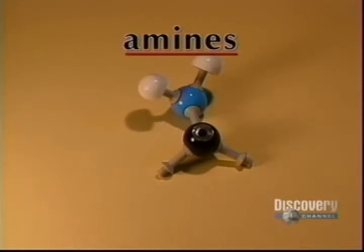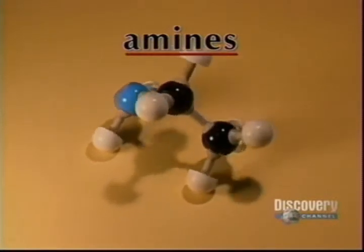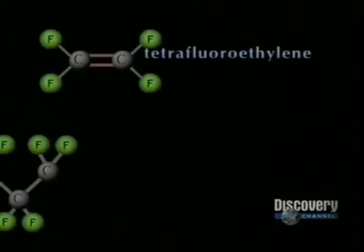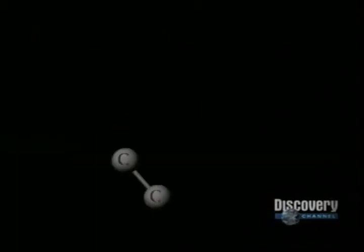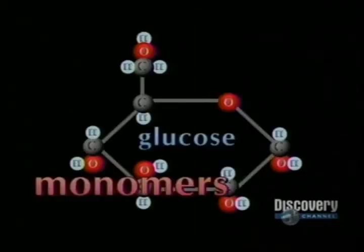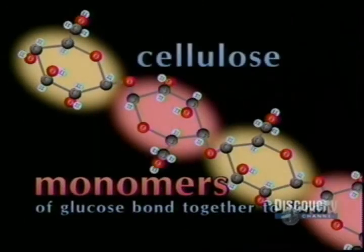Other compounds are produced when carbon combines with nitrogen, as with amines and amides. Organic polymers are molecules with a backbone of carbon atoms. Many hydrocarbons are polymers, but not all polymers are hydrocarbons. Polymers can also combine with oxygen, fluorine, nitrogen, silicon, phosphorus, and sulfur. They are made up of subunits called monomers, which form long chains to make larger molecules containing thousands or even millions of atoms.